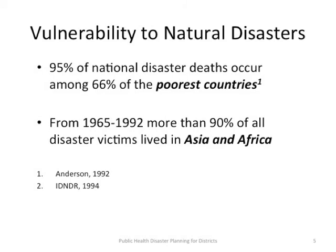Regarding vulnerability to natural disasters, 95% of natural disaster deaths occur among 66% of the poorest countries. From 1965 to 1992, more than 90% of all disaster victims lived in Asia and Africa.